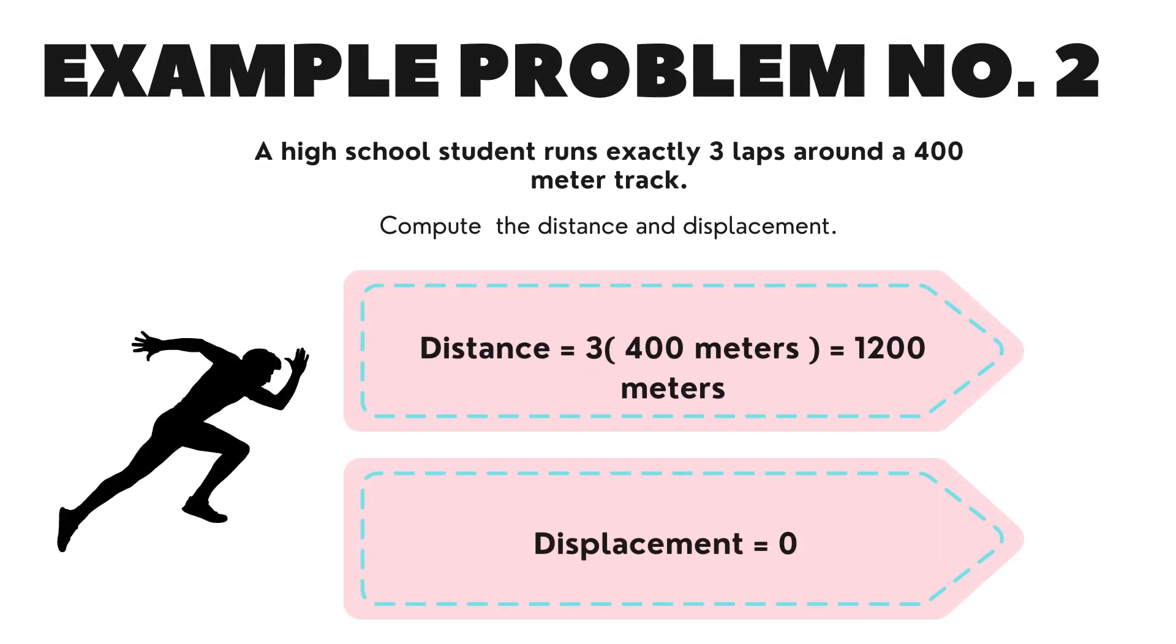Distance is equal to 3 multiplied by 400, that is equal to 1,200 meters. Displacement is equal to 0. Why? Because the student started and stopped in the same place.